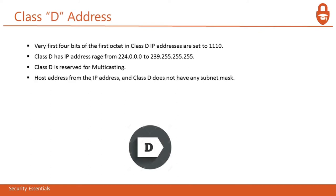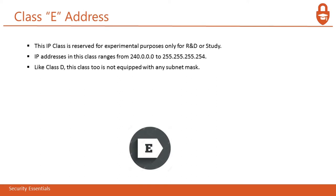In Class D, the first four bits of the first octet are set to 1-1-1-0. Class D IP addresses range from 224.0.0.0 to 239.255.255.255. Class D is reserved for multicasting and does not have a subnet mask. In Class E, the last class, the IP range is reserved for experimental purposes only — for R&D and study — ranging from 240.0.0.0 to 255.255.255.254. Like Class D, Class E is not equipped with any subnet mask. So we have discussed Classes A, B, C, D, and E.